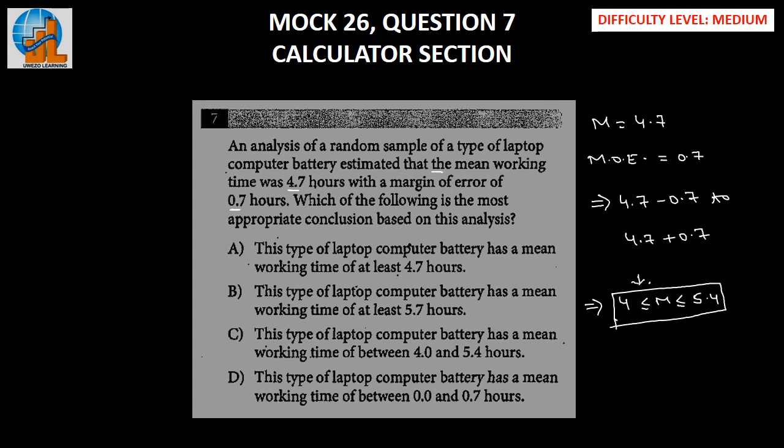And we need to find out which of the following is the most appropriate conclusion based on the analysis. So we have already found the conclusion that the value for the mean would be somewhere between 4 and 5.4. So let's just go through our options here.